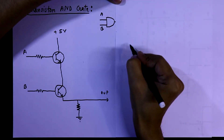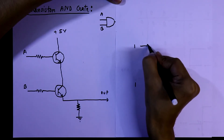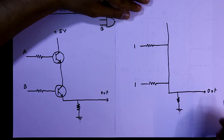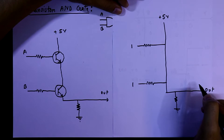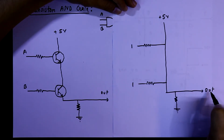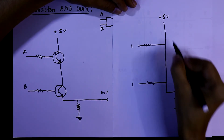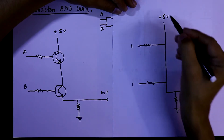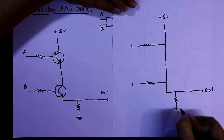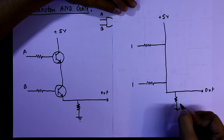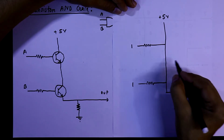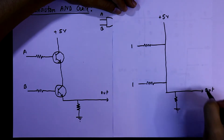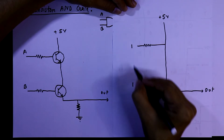For the fourth condition, we apply 1 and 1, so both transistors work as a closed circuit. The 5 volts is directly connected to the output. Between the output and the ground there is a pull-down resistor, so current flows through the low-resistance path and we get 5 volts at the output. Therefore 1, 1 gives output 1.